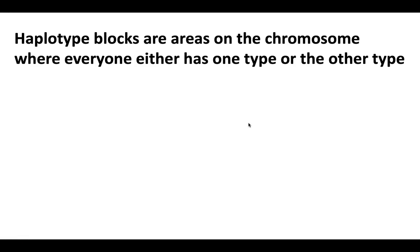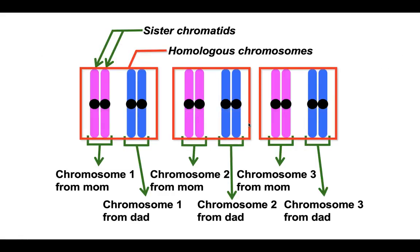Haplotype blocks are areas on the chromosome where everyone in the species or population has either one type or the other type.